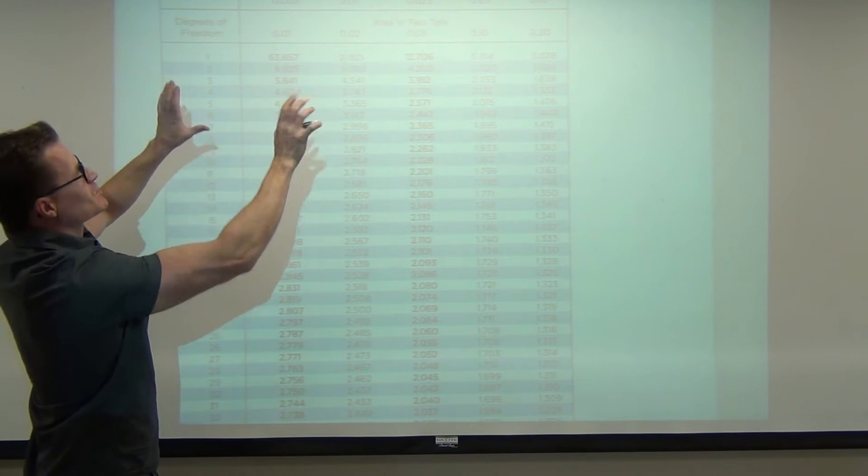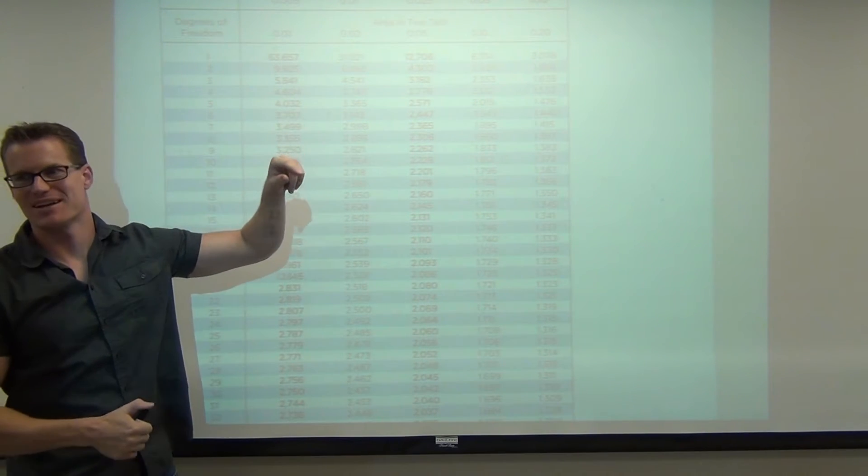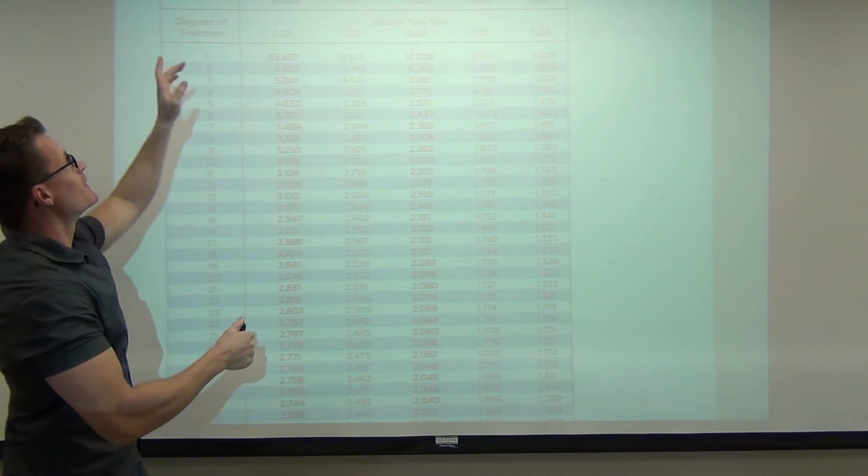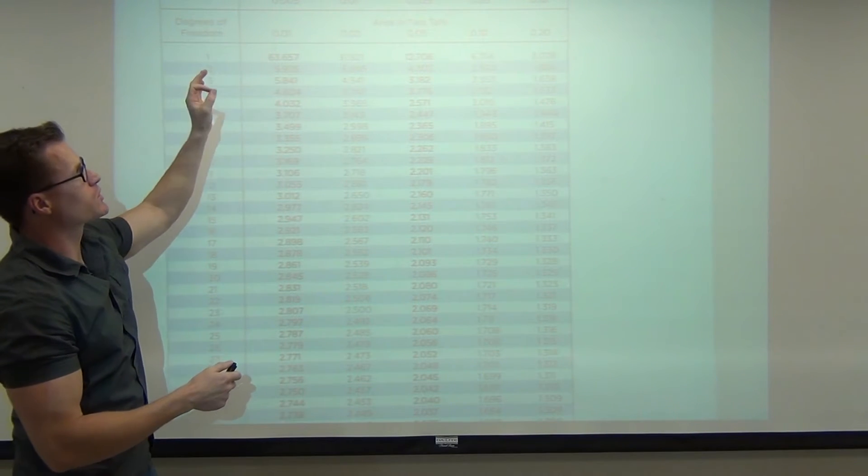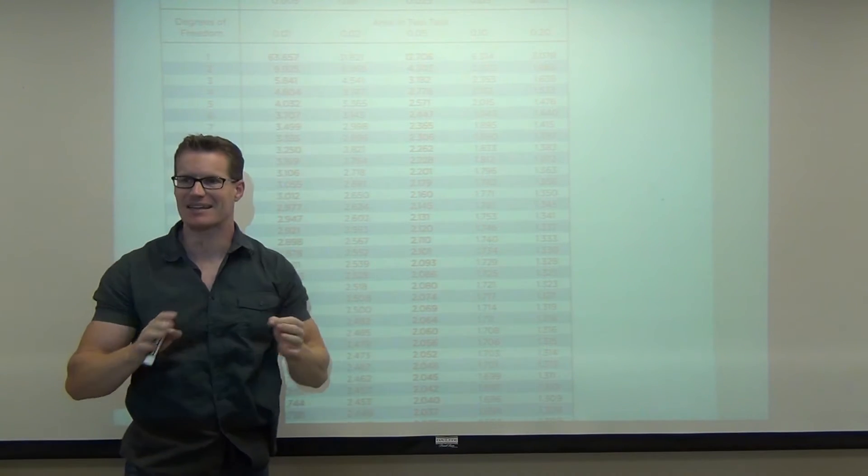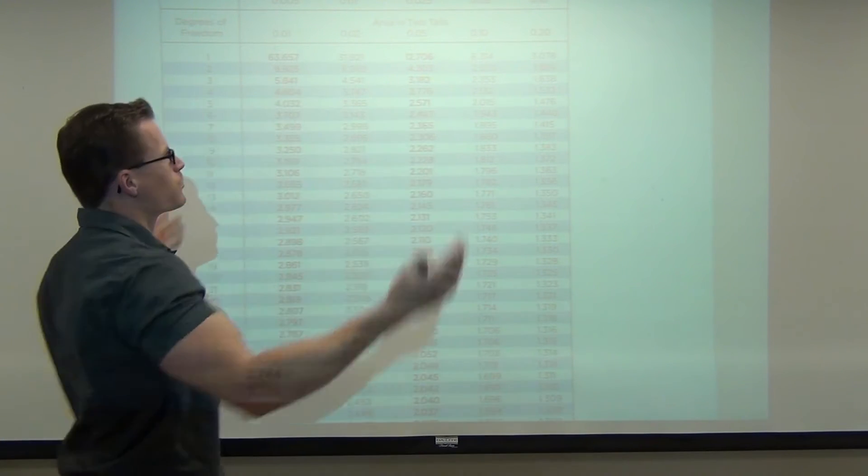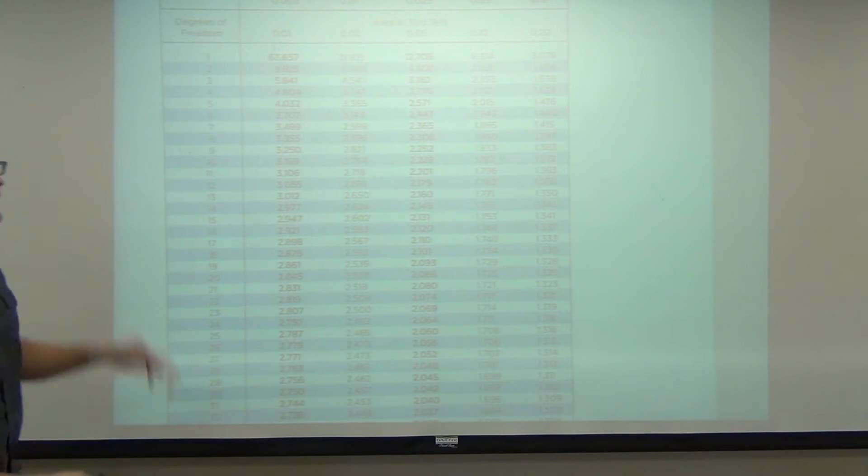So we have this T distribution. It says critical T values. That's exactly what we're looking for. Let's look at this chart. Just kind of look at it for a second. What's on the left hand side?